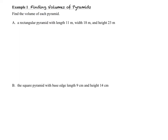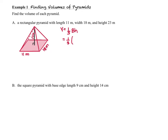In example one, we're finding the volume of pyramids. Part A has a rectangular pyramid with length 11 meters, width 18 meters, and height 23 meters — we assume that's the perpendicular height. I'm going to draw a diagram, write down our formula, and show substitution: one-third times length times width times height, which is one-third times 11 meters times 18 meters times 23 meters, giving us a volume of 1,518 cubic meters.